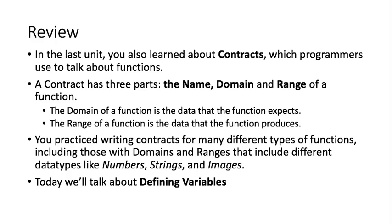In the last unit, you learned about contracts, which programmers use to talk about functions. A contract has three parts: the name, the domain, and range of a function. The domain is the data the function expects, and the range is the data the function produces.